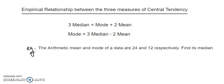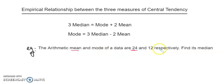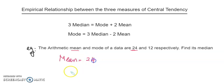For a quick example to understand this formula, I have taken a question where the mean is 24 and the mode is 12. So let us write down: mean is 24 and mode is 12.